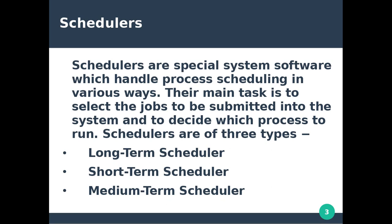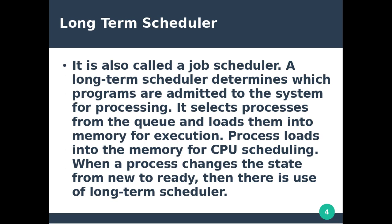Schedulers are divided into three types: long-term scheduler, short-term scheduler, and medium-term scheduler. The long-term scheduler is also called the Job Scheduler. A long-term scheduler determines which programs are admitted to the system for processing.